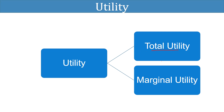There are two types of utility: total utility and marginal utility. Total utility is the sum of utility derived from consuming different units of a commodity — that is, the total satisfaction a consumer gets from consuming a number of units of a commodity. Marginal utility is the additional utility derived from consuming additional units of the commodity.